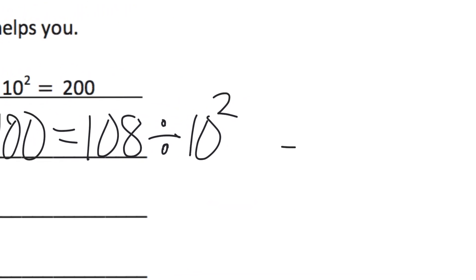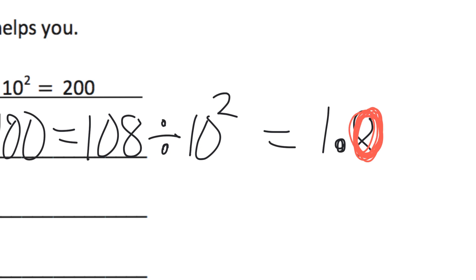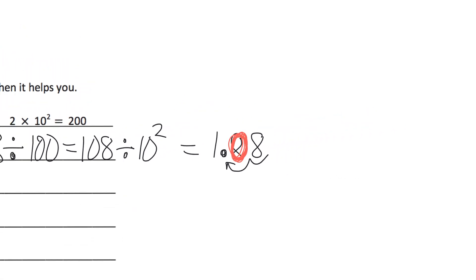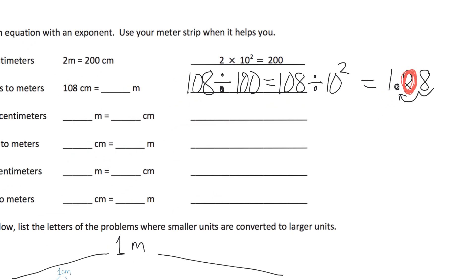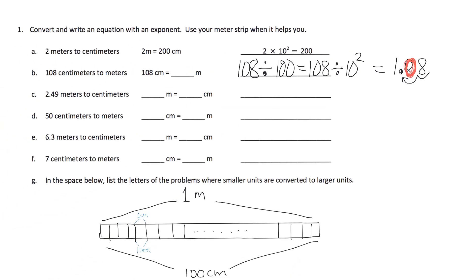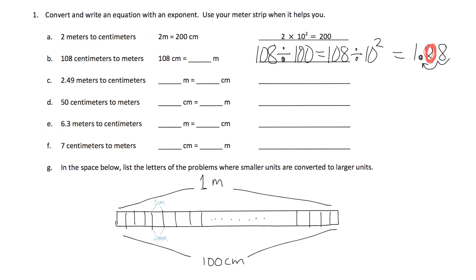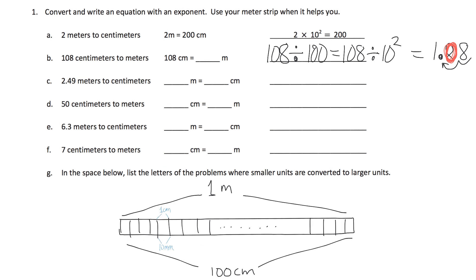That equals 1.08. And that's because the decimal moved two places to the left because we divided by 100. So let's zoom out so that you can see all that going on right there. And that's the kind of concept going on in this series of problems.